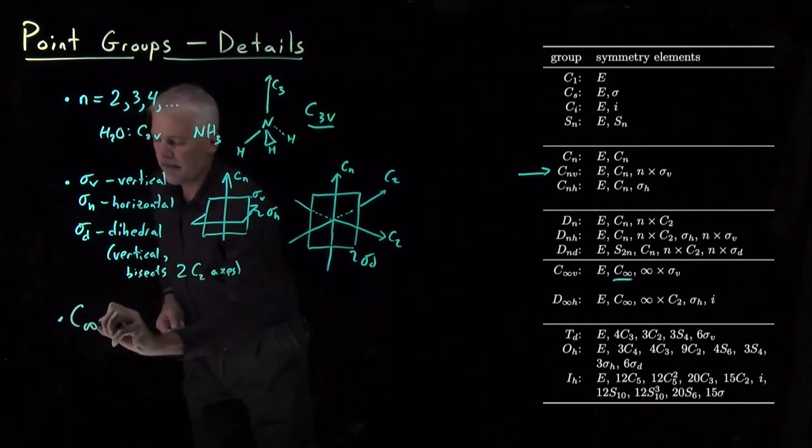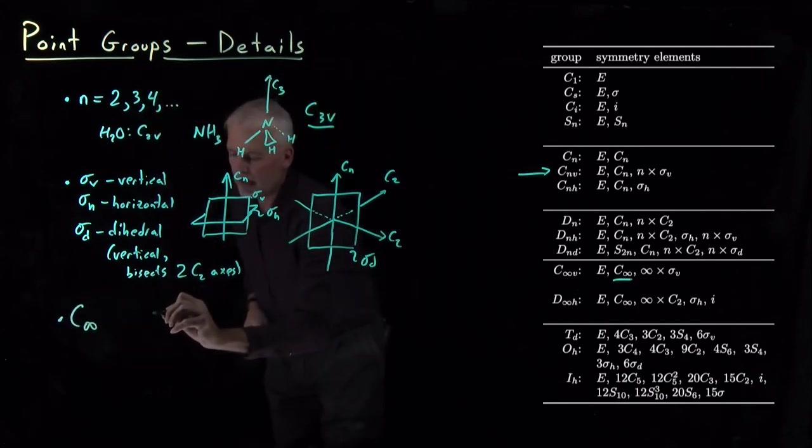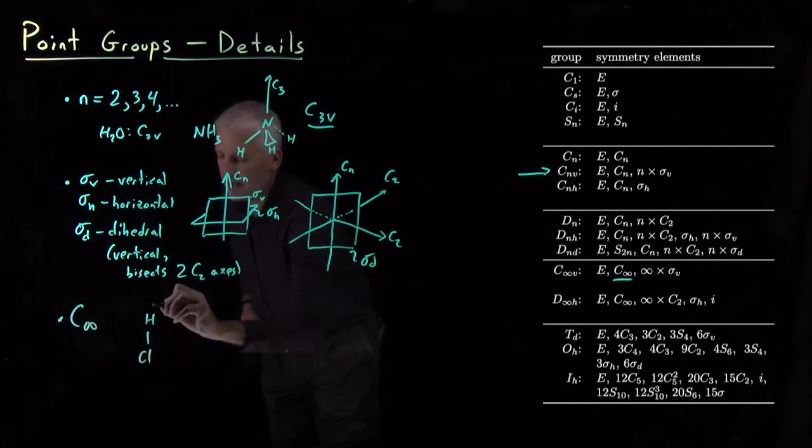A C infinity axis would be for molecules like HCl.